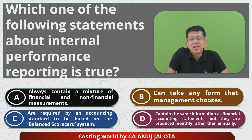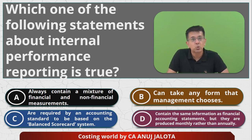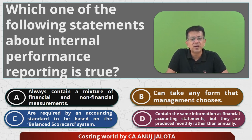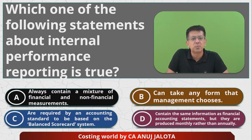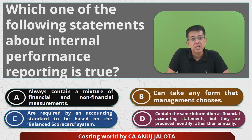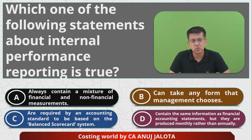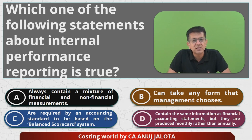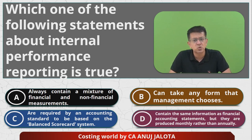Option C says it is required by an accounting standard to be based on a balanced scorecard system. Obviously this is not true. There is no accounting standard that we are trying to follow here. Accounting standards relate to financial reporting — this is internal reporting. So it is not based upon any accounting standard.